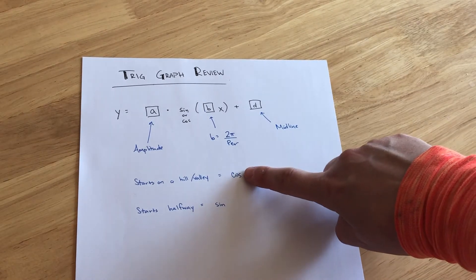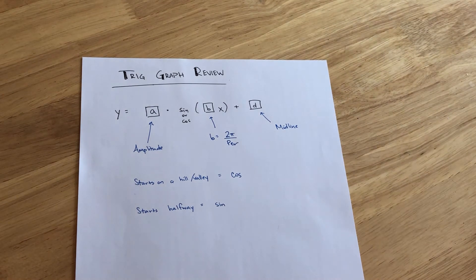Keeping in mind that if at the midline, on the y-axis, we're starting on a hill or a valley, so we're above or below the midline, that's definitely a cosine function.